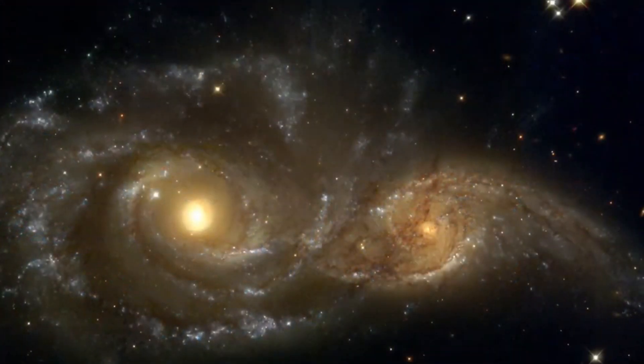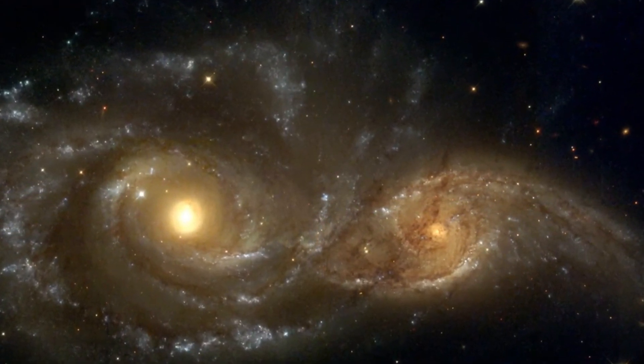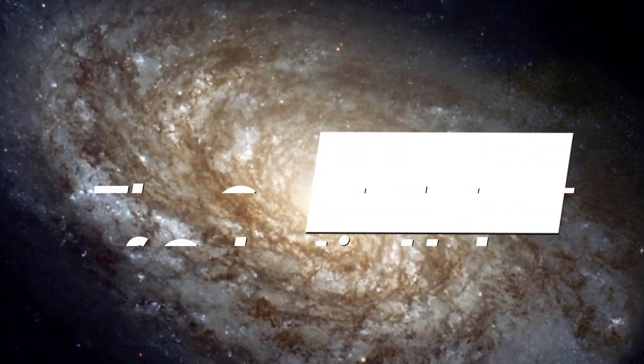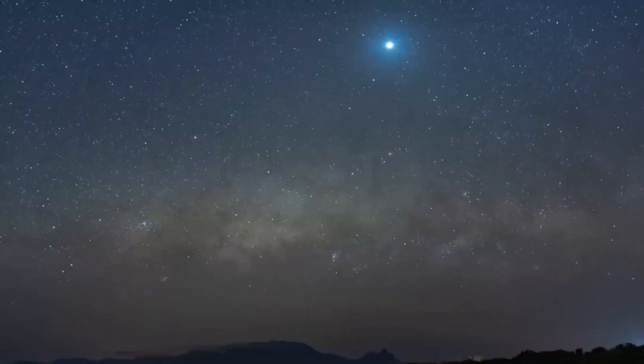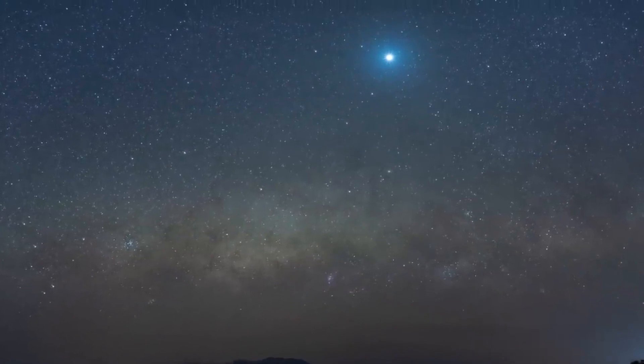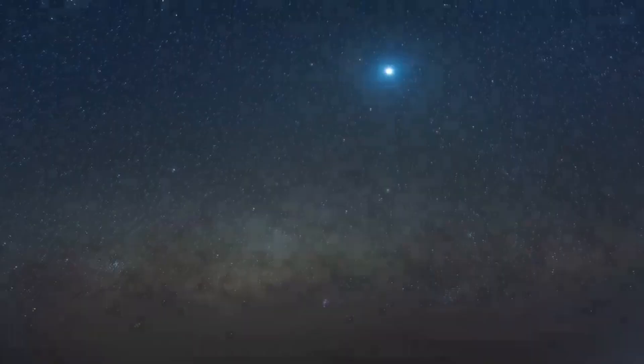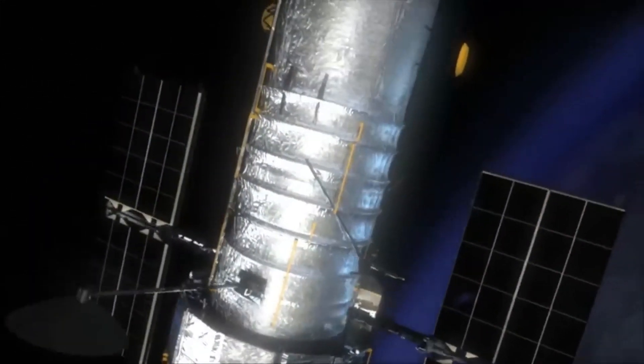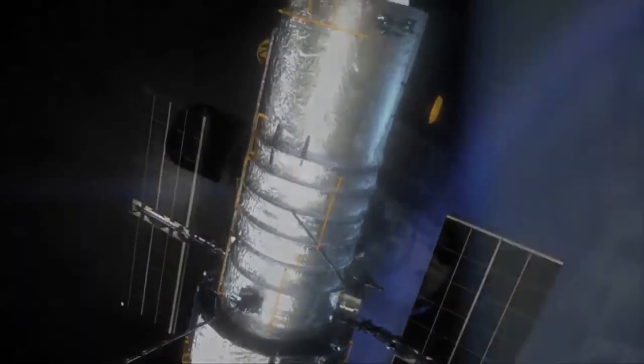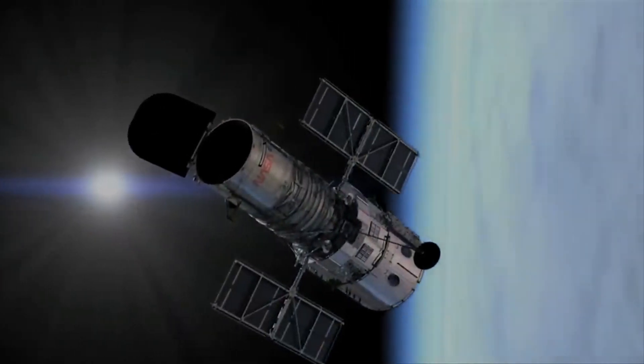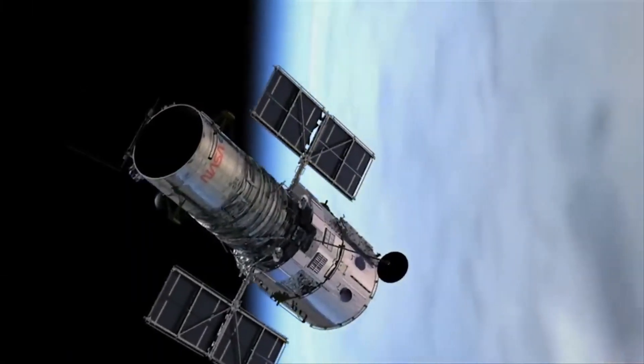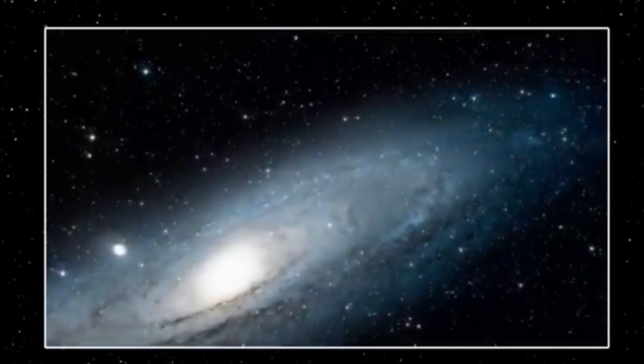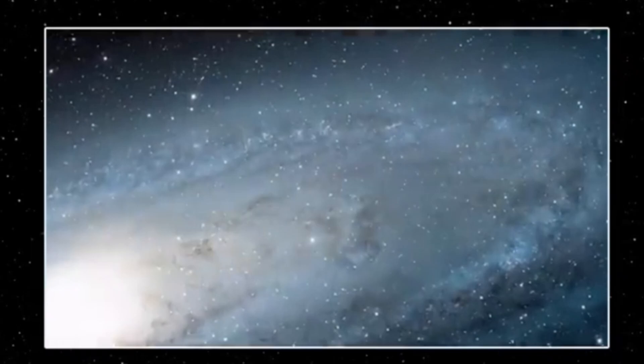Imagine gazing up at the faint Andromeda galaxy in the night sky. It looks so tiny and non-threatening. But believe it or not, Andromeda's invisible outskirts are already merging with our own Milky Way. In 2020, astronomers used the Hubble Space Telescope to precisely map Andromeda's galactic halo, a ghostly envelope of gas, dust, and stray stars enveloping every galaxy. They discovered Andromeda's halo stretches a mind-blowing two million light years from its center, over halfway to the Milky Way.